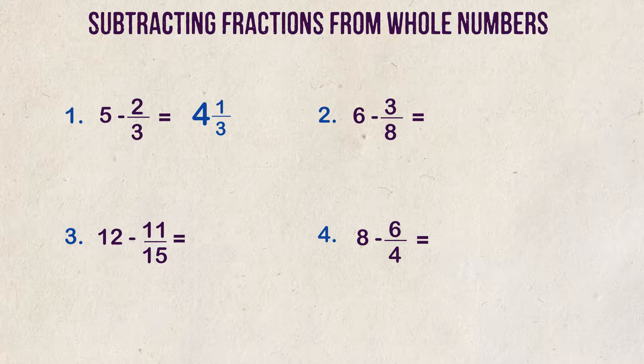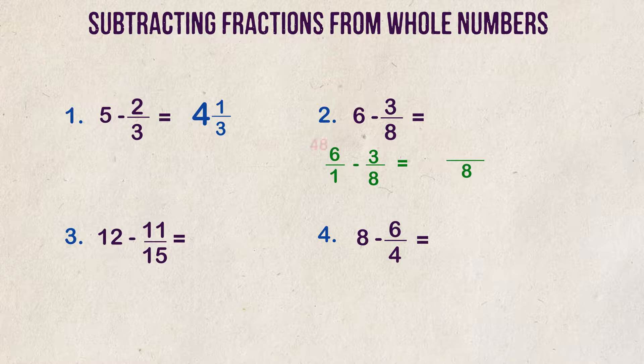Example 2. Let's do one more the same way with the previous example. What is 6 minus 3 eighths? We start by putting 6 over 1, which gets it into fractional form. Next, we multiply denominators together to get a common denominator of 8. We then cross-multiply 6 times 8 and we get 48. We multiply 1 times 3 and we get 3. 48 minus 3 is equal to 45, which goes over our denominator of 8.